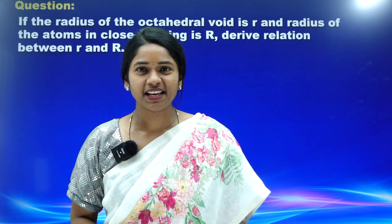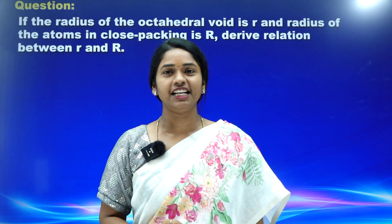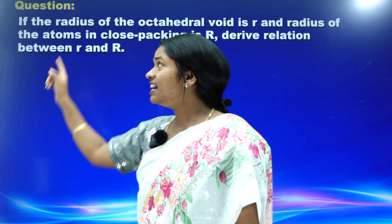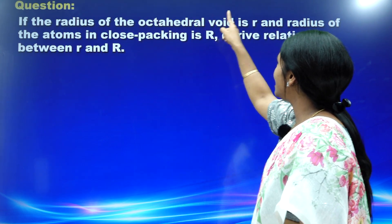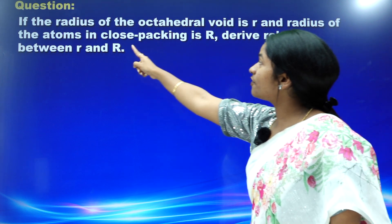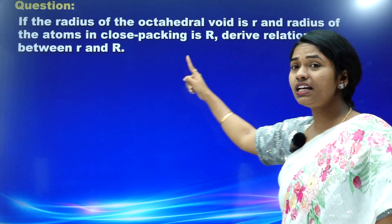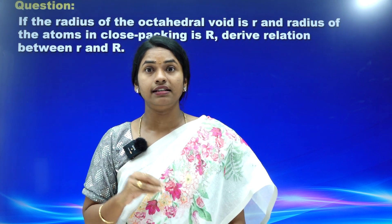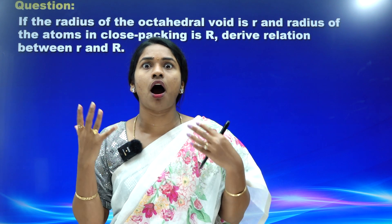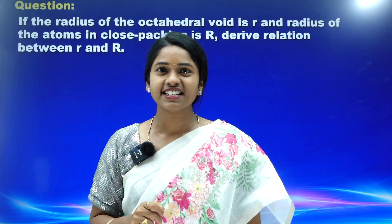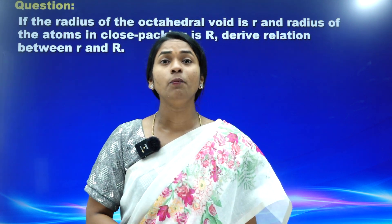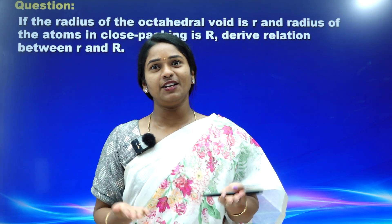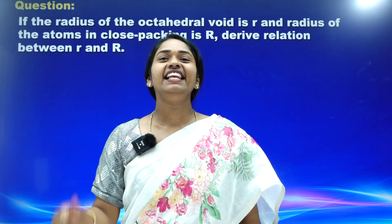Hi students, I am your Komali ma'am. In this session, I am going to teach you an excellent and typical question from NCRT solid state chapter. If the radius of the octahedral void is R and the radius of the atoms in close packing is capital R, derive the relation between small r and capital R. This is one of the hidden questions in NCRT exercise. But in today's session, your Komali ma'am is going to tell you a super tip. Watch this video up to the end, then you will explain your friends in your classroom this easy methodology. Let's begin the session.